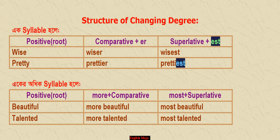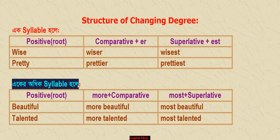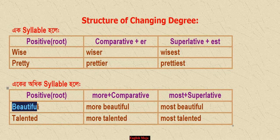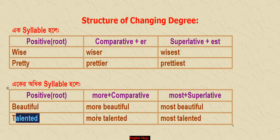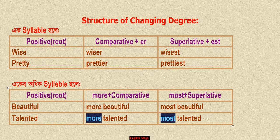If the adjective has three or more syllables, what happens? For example: 'beautiful.' The comparative is 'more beautiful' and the superlative is 'most beautiful.' Similarly, 'talented' — the comparative is 'more talented' and the superlative is 'most talented.'